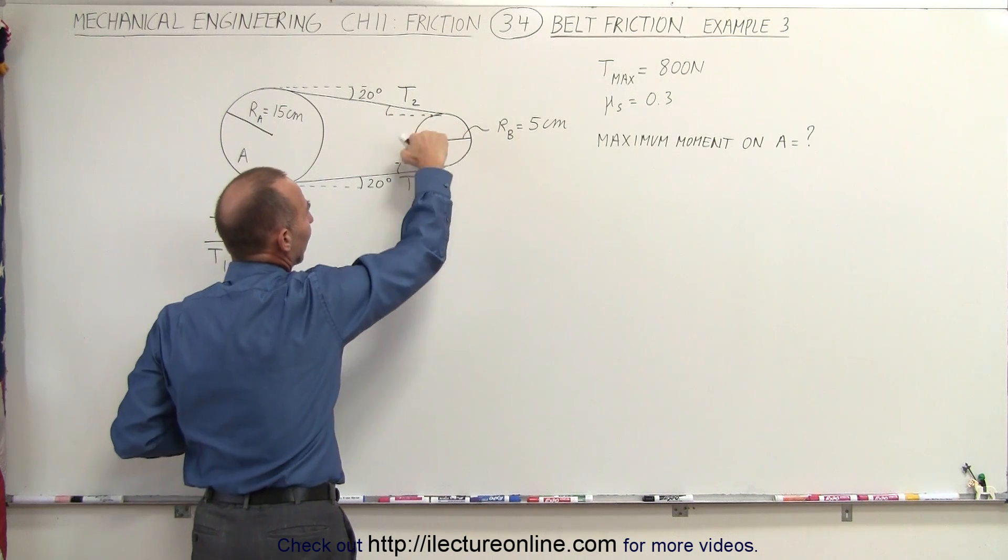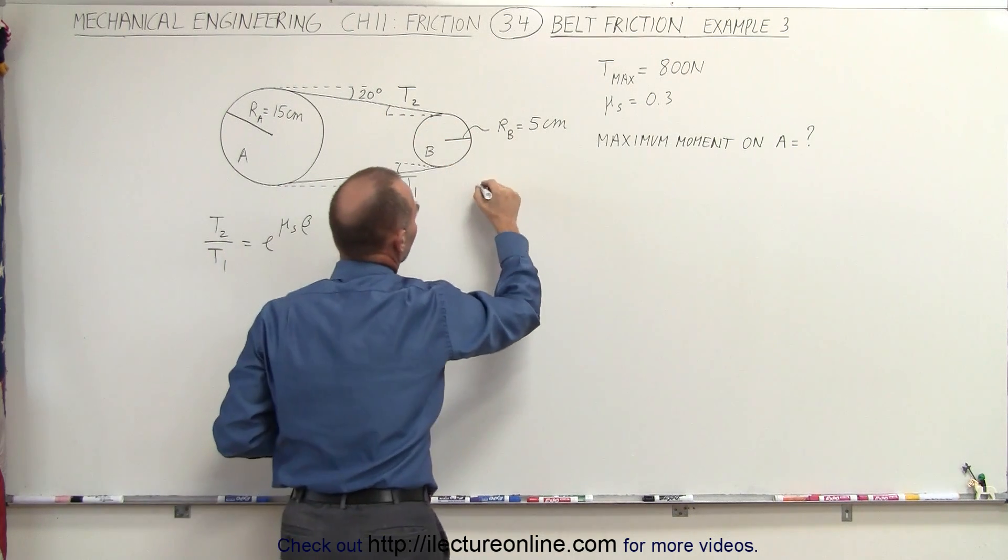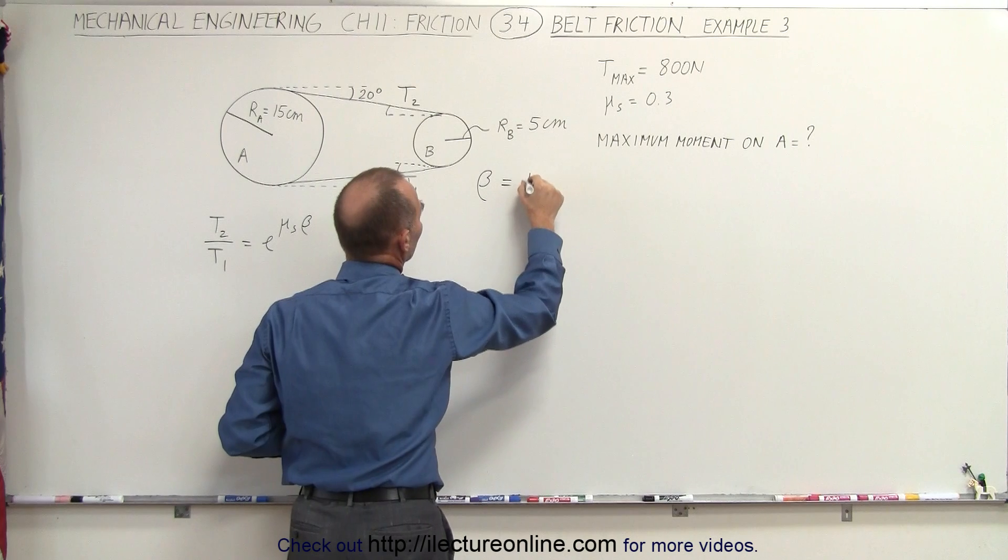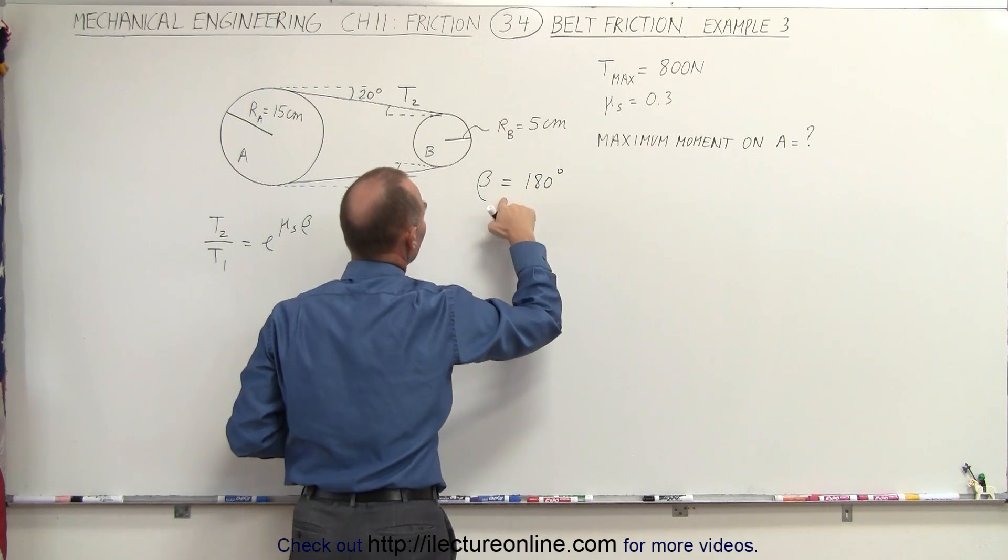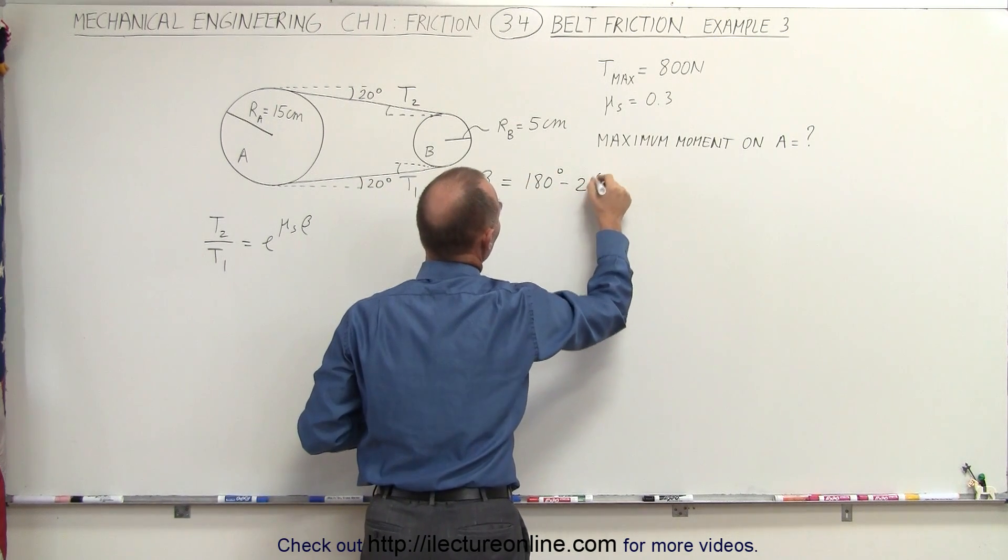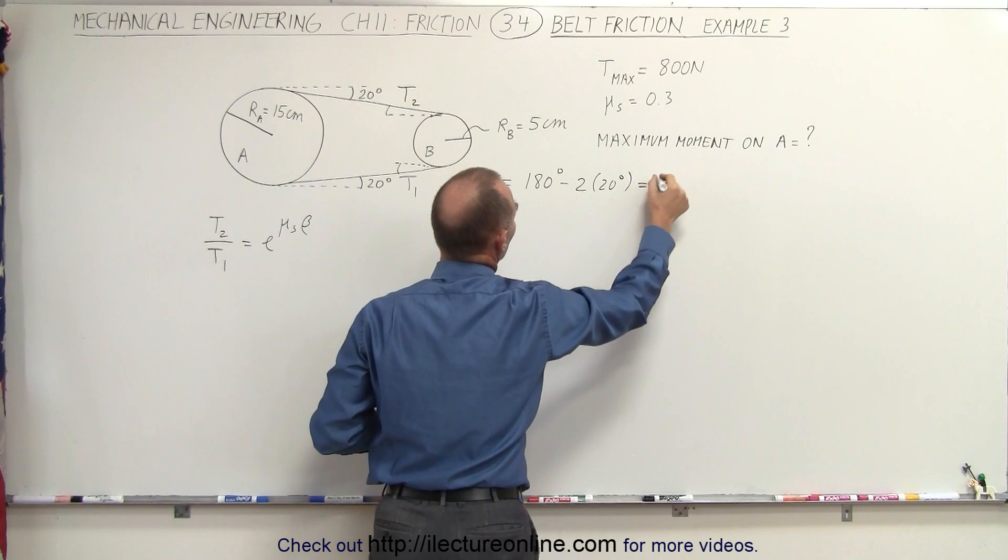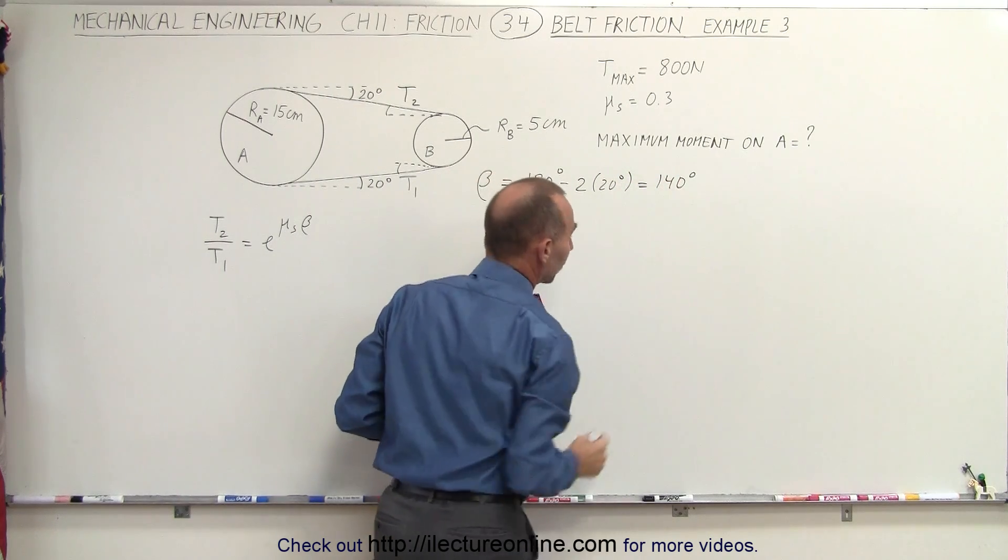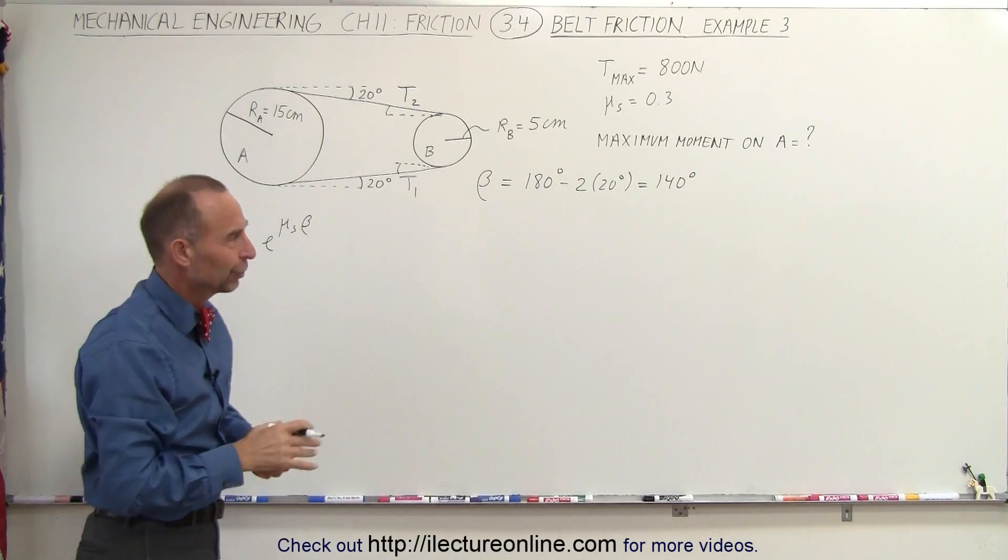Which means that the angle of contact beta here on pulley B is going to be 180 degrees, which would be half a turn minus 2 times 20 degrees, which is 140 degrees, which of course we're going to have to convert to radians.